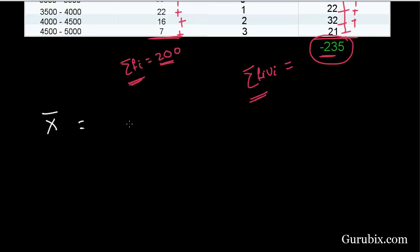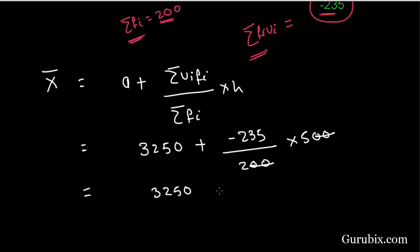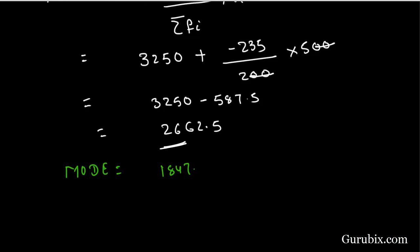We know that mean equals A plus (summation of fi·ui divided by summation of fi), into h. This equals 3250 plus (minus 235 divided by 200), into 500. That gives 3250 minus 587.5, equal to 2662.5. Hence the required mean is 2662.5. So, mode is 1847.8 and mean is 2662.5.